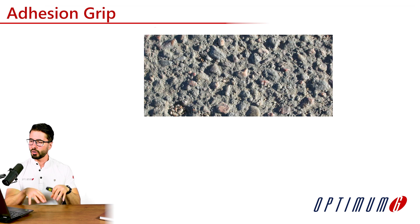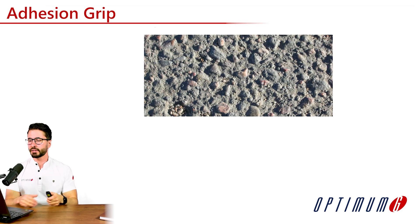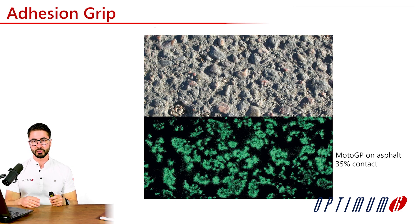We also have to keep in mind that roads are not perfectly smooth. We can see all of the stones and the details on the asphalt surface. If we scan to understand how much the tire surface is really in contact with the road surface, we can see that sometimes it's a minority of the contact area — for example, in this case we have only 35% contact. So we can also start seeing that a compound that allows for more contact, for example a softer compound, could also help generate more grip.